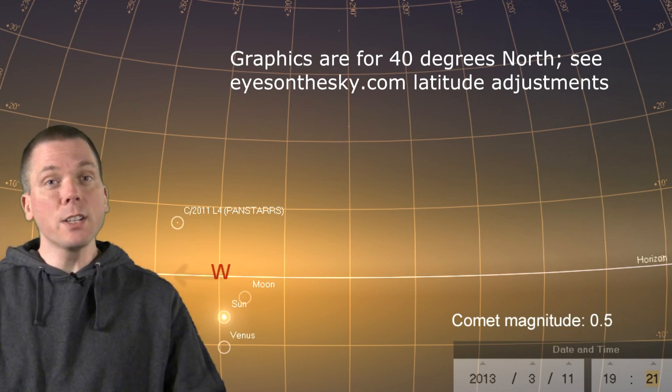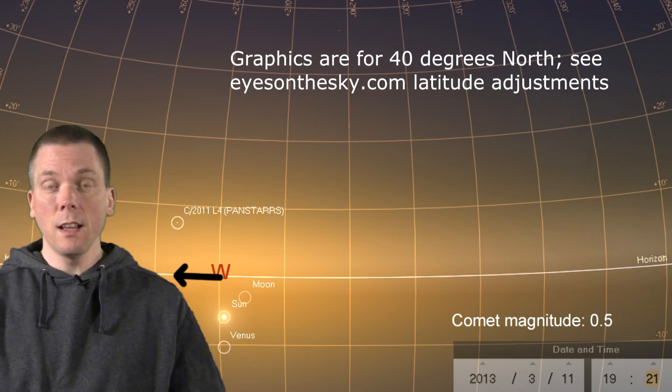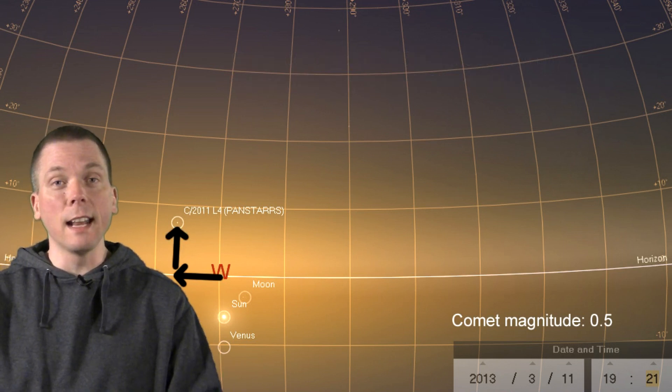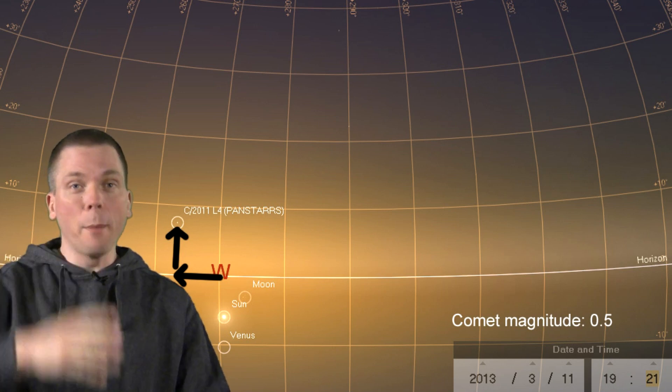And the comet is 8 degrees south from the sun, and 8 degrees above the horizon that day, so a little less than a fist width over and up.